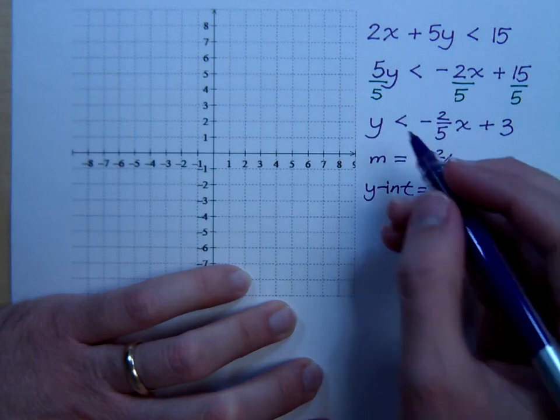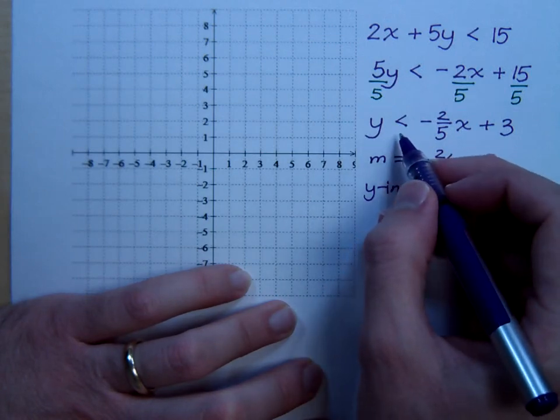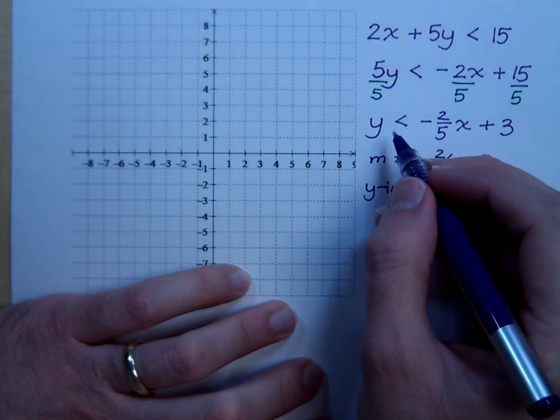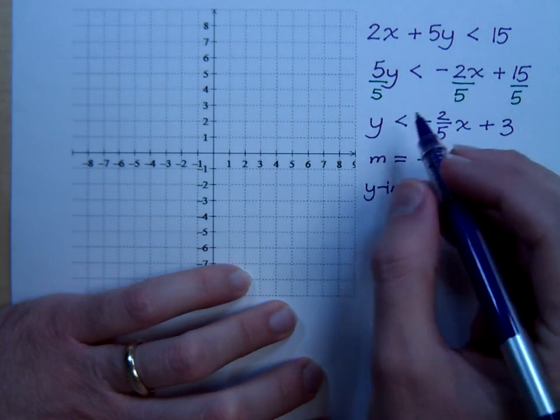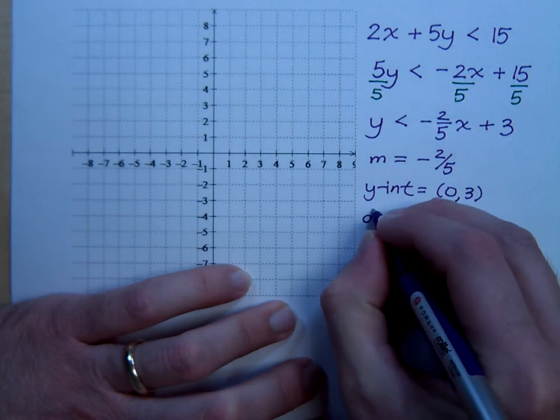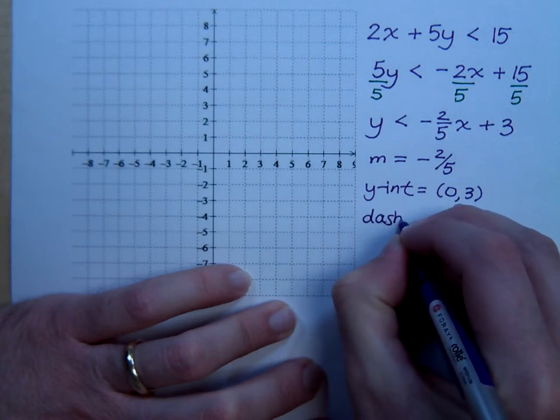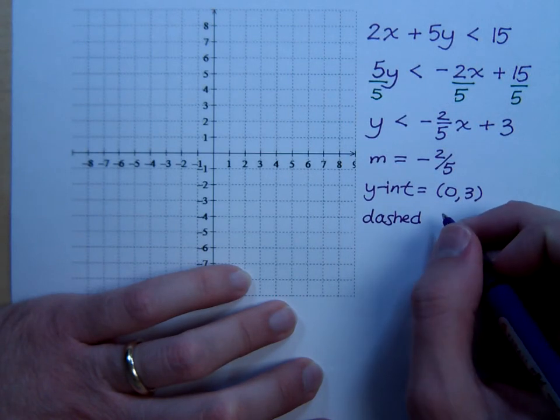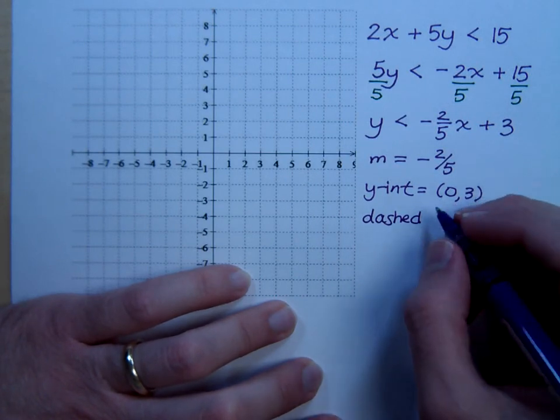It's a dotted line. When it comes to being solid or dashed, the inequality, it's not the direction that it is, but it's whether it has equals or not. This doesn't have equals, so it's going to be a dashed line. He's just testing, you know. Yeah, he's just testing to see if I know what I'm talking about. It's not like I've been teaching this stuff for years and years.